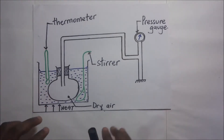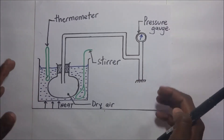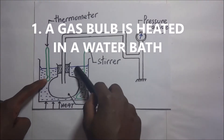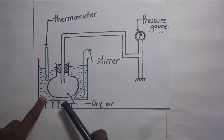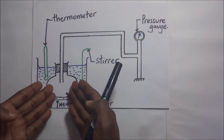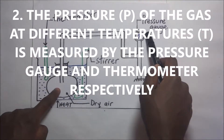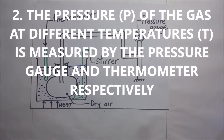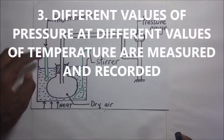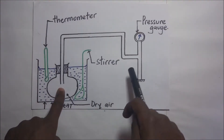When we compare the temperature and pressure of the dry air, we will be able to verify the pressure law. Chronologically: a gas bulb is heated in a water bath. We heat the liquid, get the temperature of the water bath — which is the temperature of the dry air — and record the corresponding pressure. This is repeated, adjusting the temperature each time and recording the new temperature and corresponding pressure.